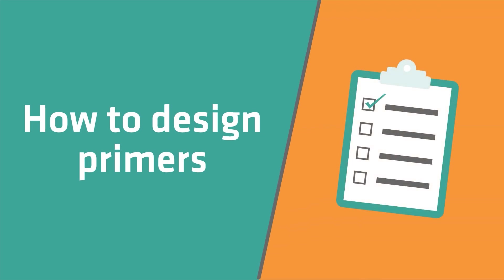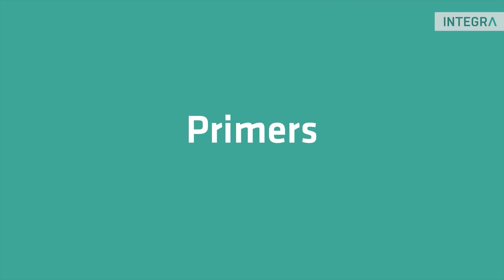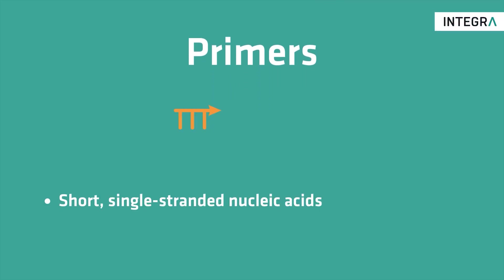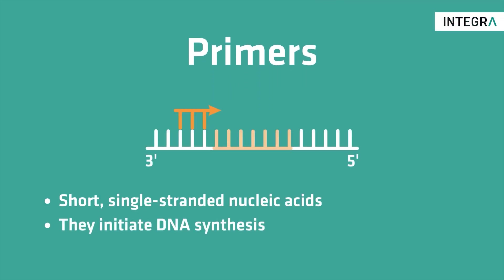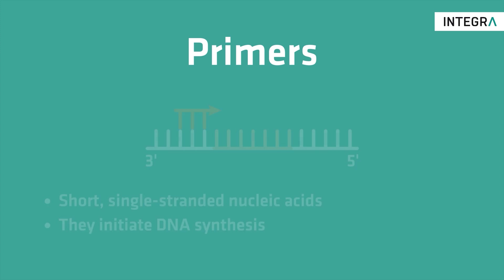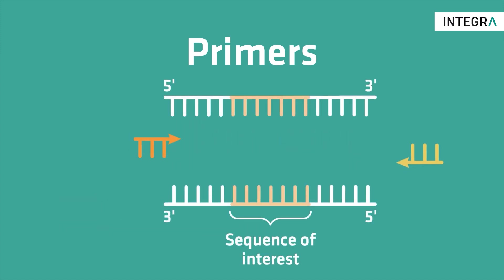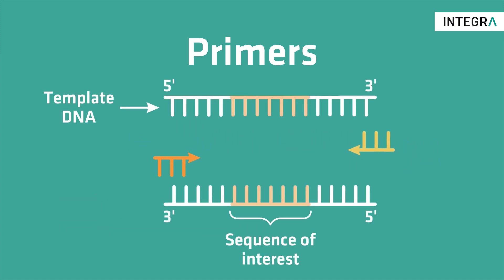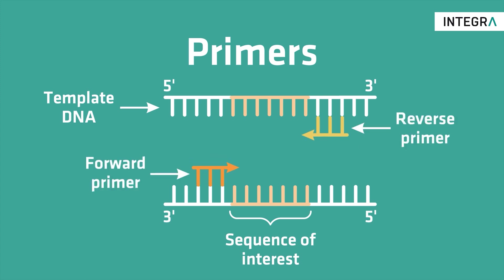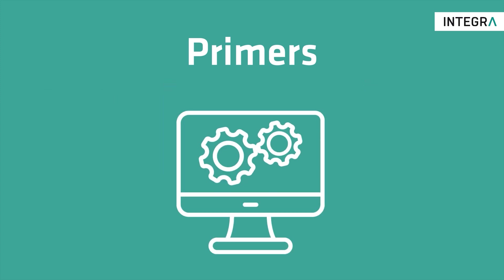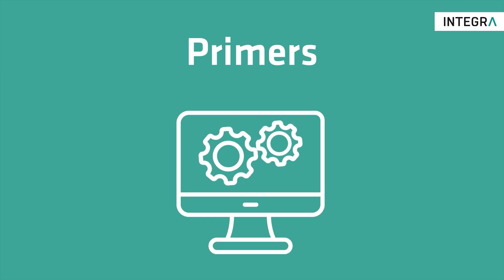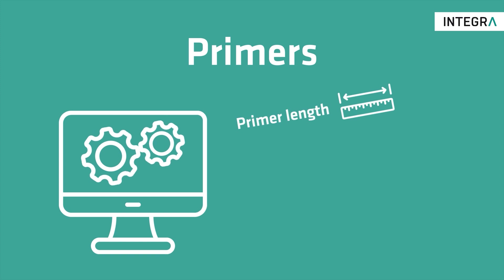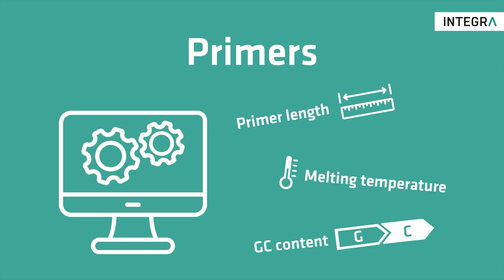Today we'll guide you through the process of designing primers for PCR. Primers are short, single-stranded nucleic acids that initiate DNA synthesis. During PCR reactions, they anneal to the plus and minus strands of the template DNA, flanking the sequence that needs to be amplified. To design primers, you usually use a primer design tool, which helps you customize your primers based on specific parameters such as primer length, melting temperature, or GC content.